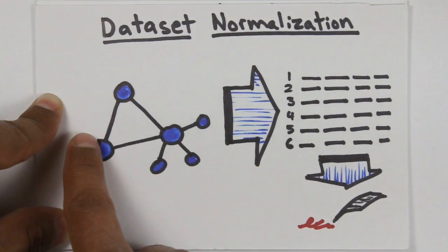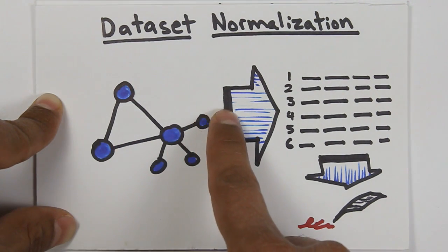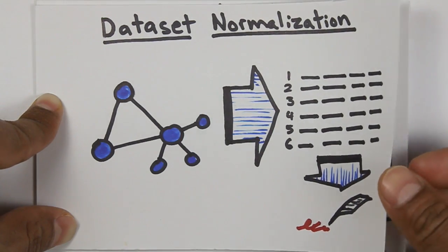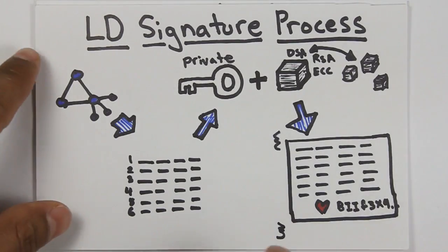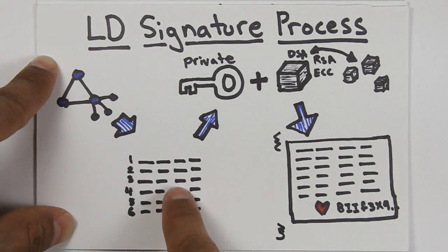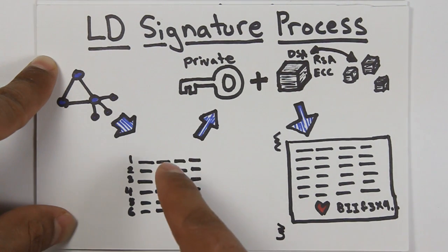The first step in this process is to take our graph of information and translate it into a normalized dataset. We've done the graph, we've gotten it into a normalized dataset. Now the next step of the whole signature process, the linked data signature process, is to actually sign the information.